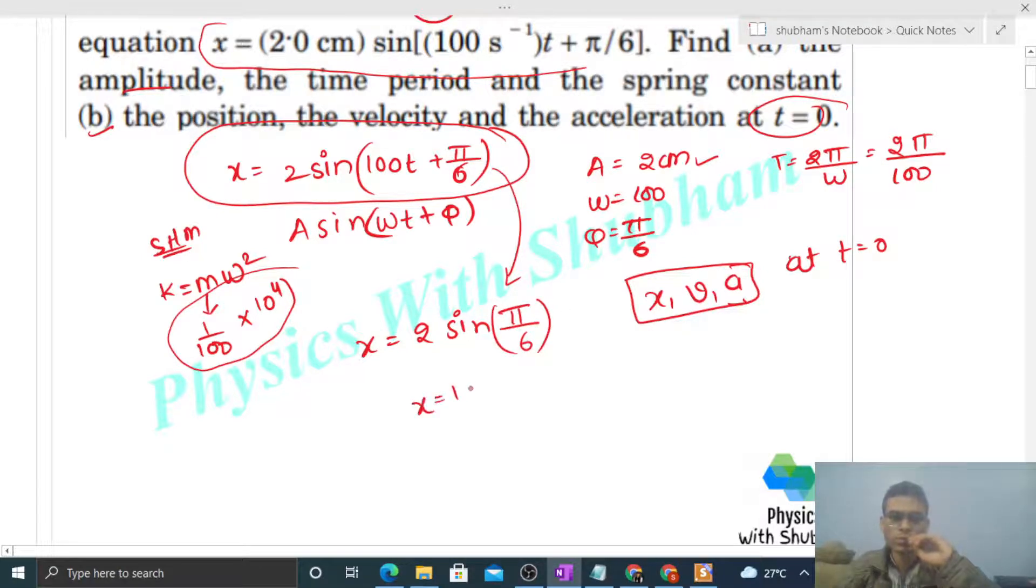Now velocity—how will it come? You can find out the function for velocity, that is dx/dt. So if we differentiate x with respect to time, 2 is constant, sin differentiation will be cos(100t + π/6), and differentiating 100t + π/6 with respect to time gives 100.